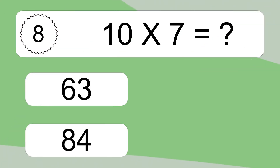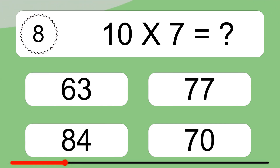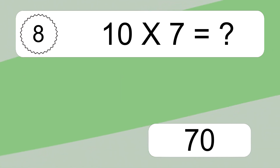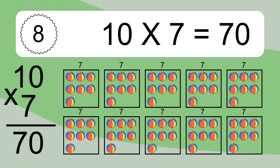10 times 7 equals what? 10 times 7 equals 70. We have 10 boxes, and each box has 7 colorful balls inside. If you count all the balls in all the boxes together, you will have 10 times 7 balls. This equals 70 balls.